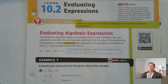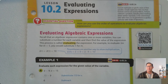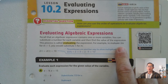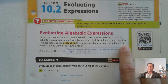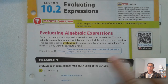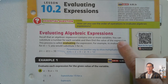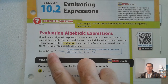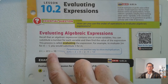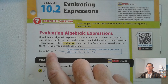Recall that an algebraic expression contains one or more variables, and we can substitute a number for each variable and then find the value of the expression. When you do that, the process is called evaluating the expression. For example, to evaluate the product of 2 and m for m equals 5, we would substitute 5 for m. Sometimes you'll see it written in parentheses when you substitute — that's just a reminder that it's multiplication.